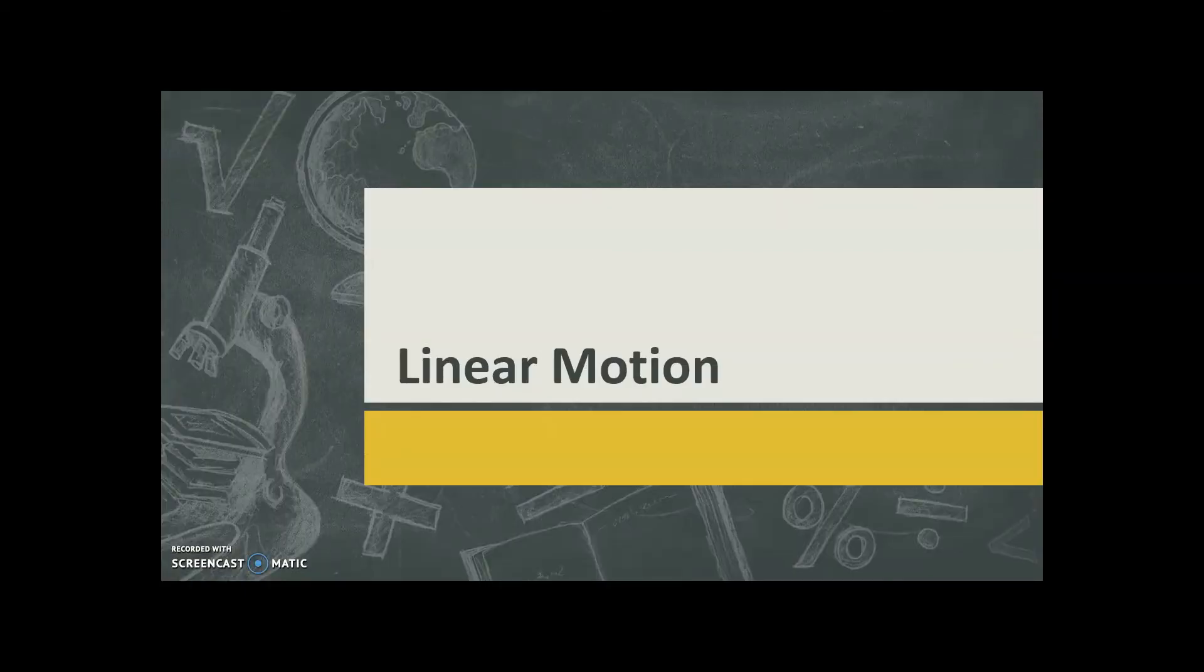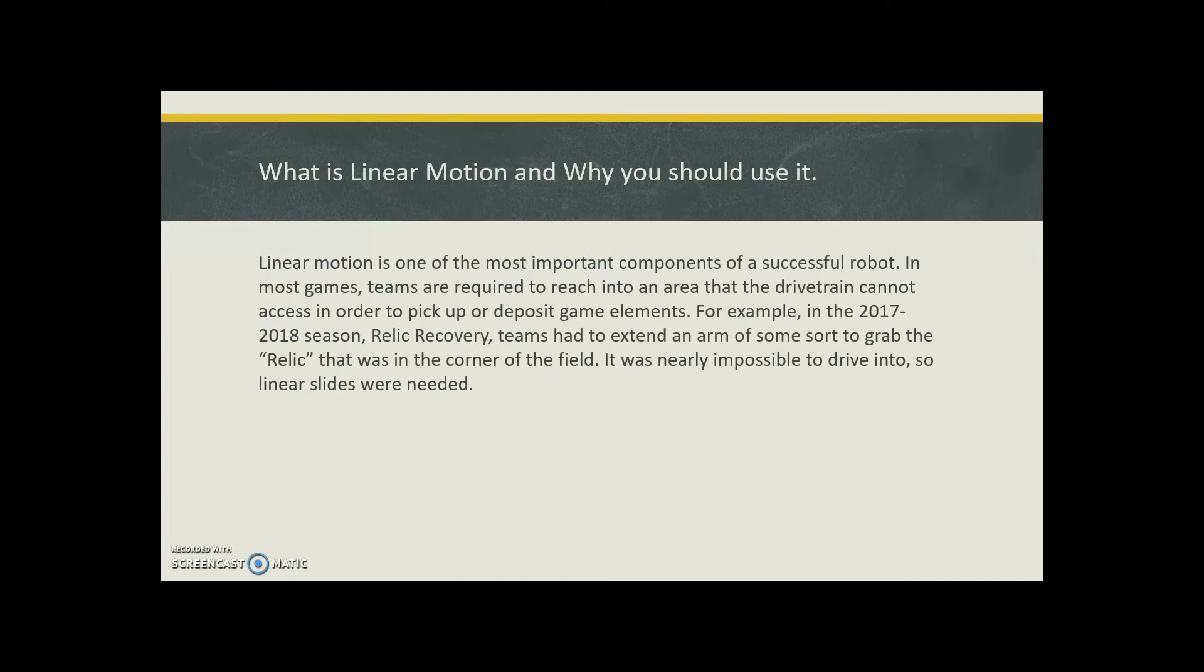Linear motion. Linear motion is an important component of a successful robot. Teams are required to reach into an area that a drivetrain cannot to pick up and deposit game elements.